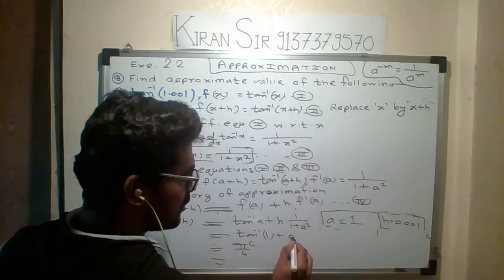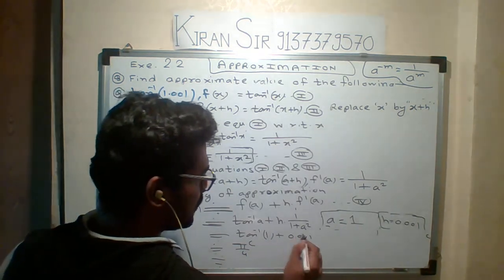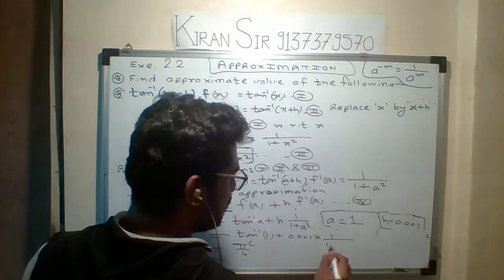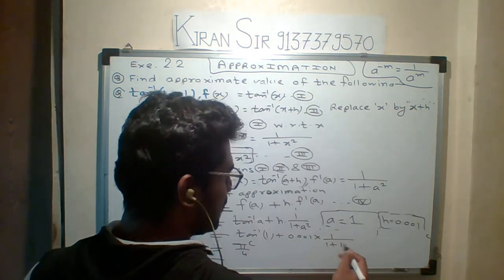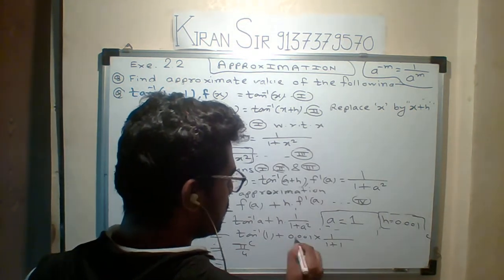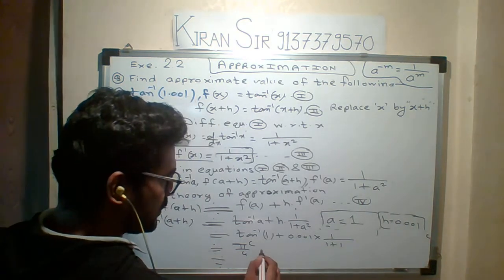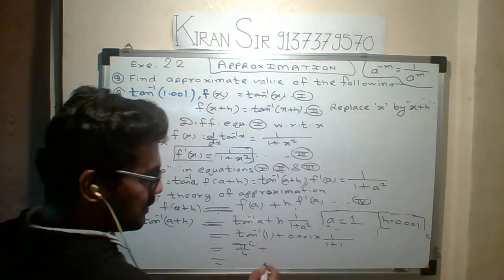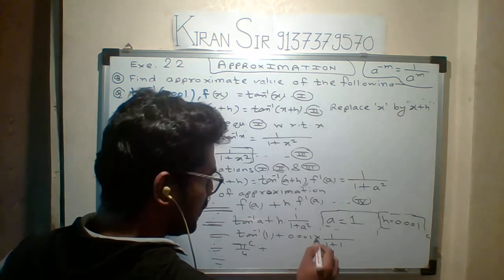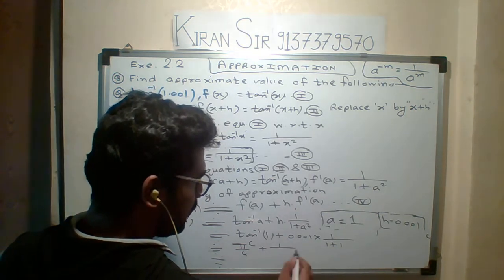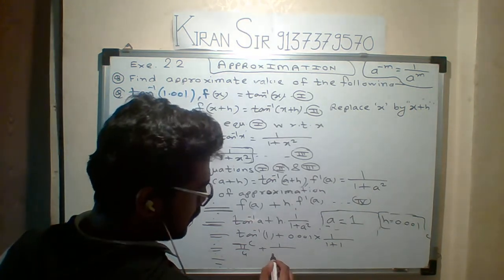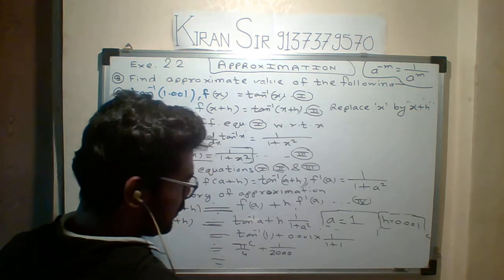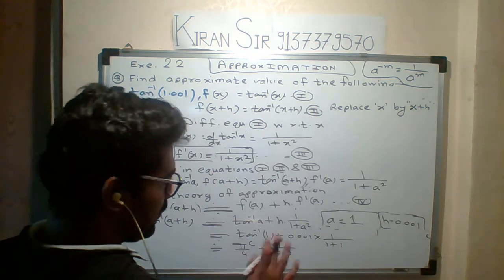What is the H value? 0.001. 1 upon 1 plus A squared. A squared is 1. 0.01 divided by 2. Which is what? 1 upon 1000. Pi by 4 plus 1 upon 2000. That is your final answer.